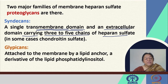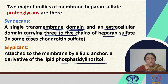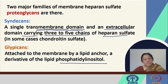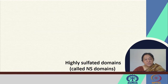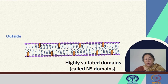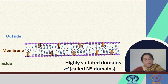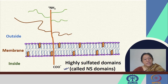Glypecans, on the other hand, are attached to the membrane by a lipid anchor — a derivative of the lipid phosphatidyl inositol. So the linkages of the carbohydrates to the protein can be through a lipid anchor or through a specific domain. Both of these can actually be shed to the extracellular space. There are specific domains called highly sulfated domains, and looking at a pictorial representation of the lipid bilayer membrane helps identify the different connectivities that link carbohydrate units to proteins of interest.